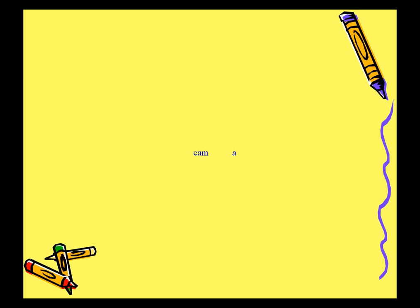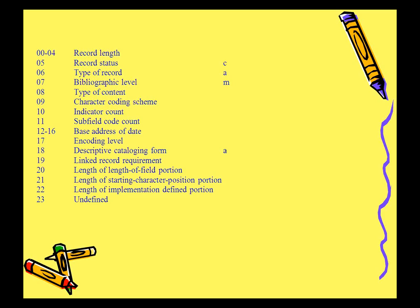Here is the leader, which is a string of single letter codes. The position of the data elements in the leader means specific things. The C in the record status means the record has been changed or corrected. The A in the type of record represents the book format. The M in bibliographic level means the work is a monograph. The blank in coding level shows this is full level cataloging. The A in descriptive cataloging form indicates this was cataloged using AACR2 revised.